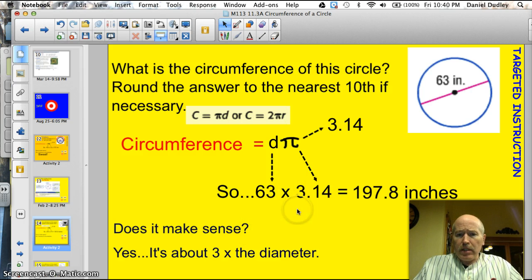All right, one more thing. Does this make sense? It's about three times the diameter. So, 63 times 3 would be like 189. So, yeah, it's right in the ballpark. Okay? Time for another one.